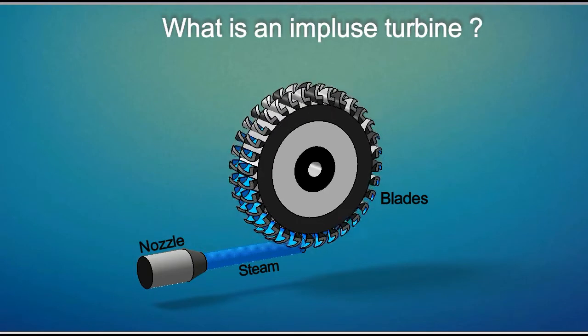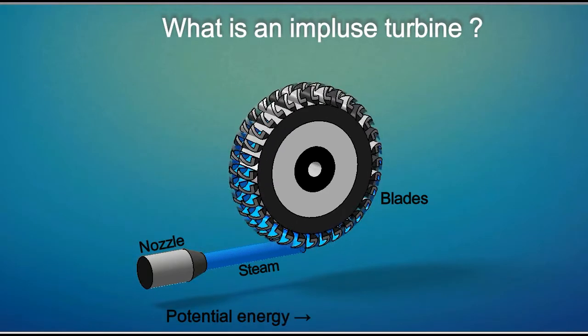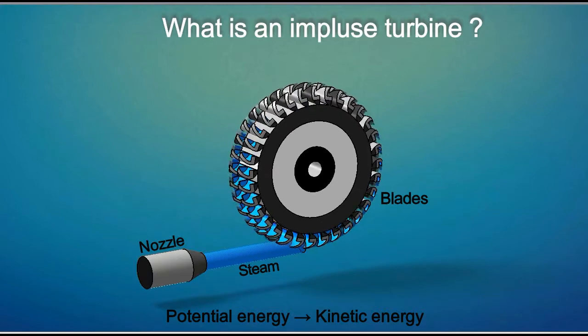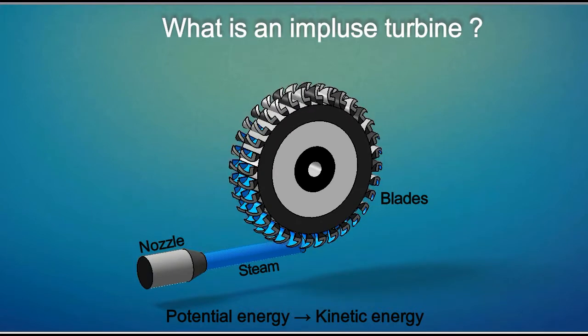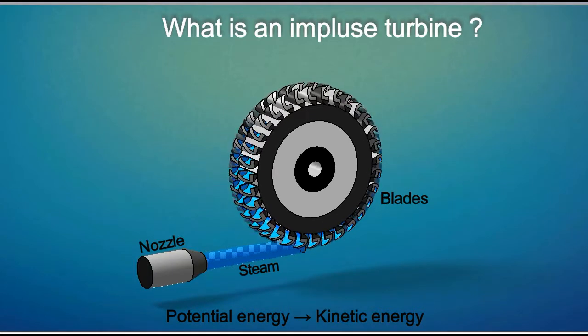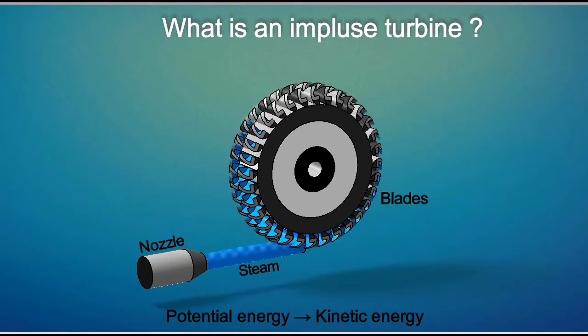The potential energy is converted to kinetic energy when the steam passes through the nozzle. The velocity of the steam is then reduced when it passes over the blades.